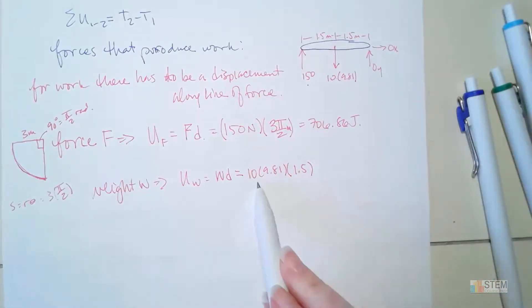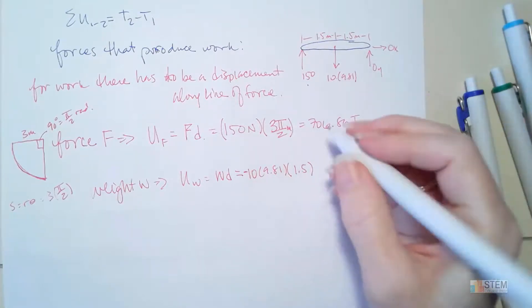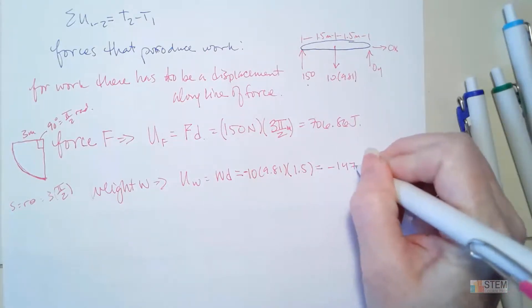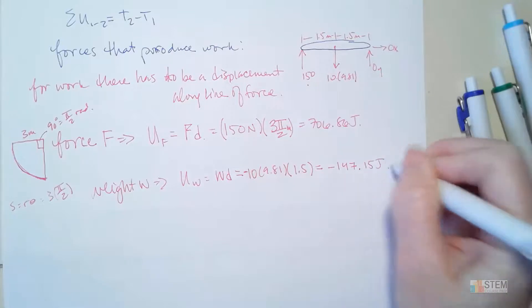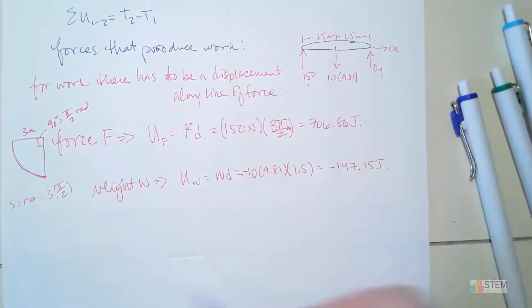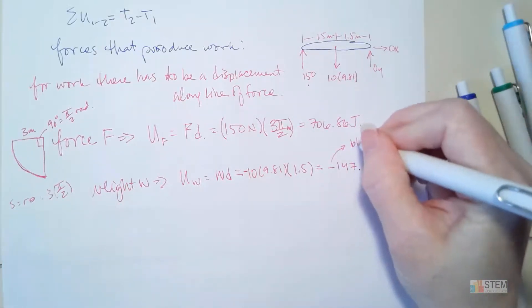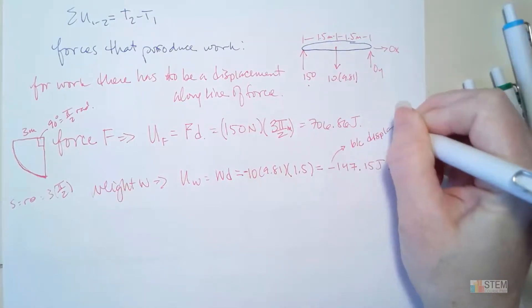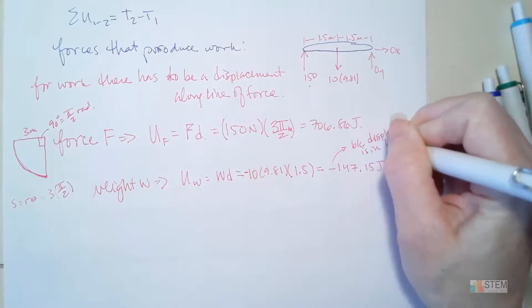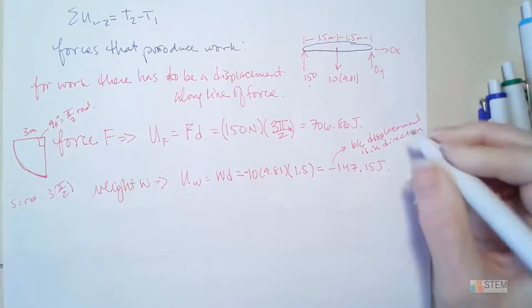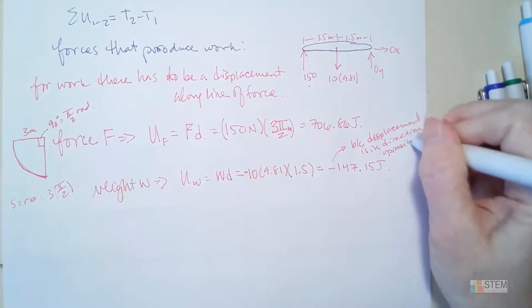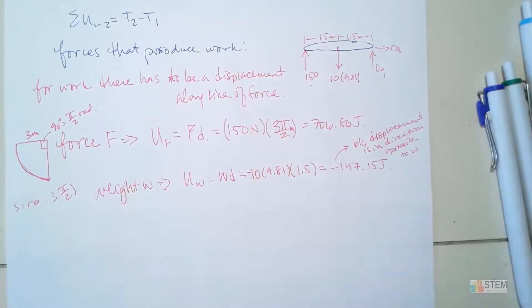It's going to be negative and it's negative because the displacement is going up, whereas the weight is going down. So they're in different directions. So that's why we get that negative, -147.15 joules. Up here, this one was positive because the displacement was in the same direction as the force. This is because the displacement is in a different direction or the direction opposite to weight.